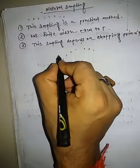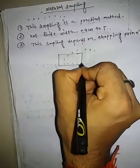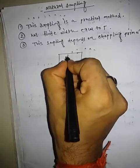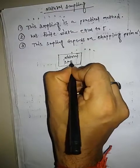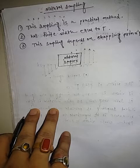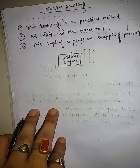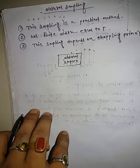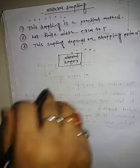This is the block diagram of Natural Sampling. A Natural Sampler is a circuit which produces the Natural Sampling technique, and is called the Natural Sampler.